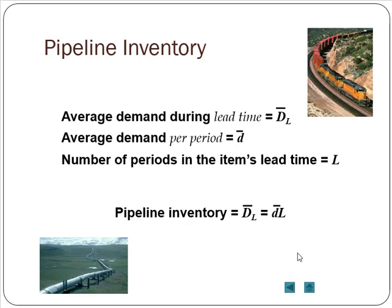So we define that as L, the lead time. The demand during the lead time is average demand per period, D bar, multiplied by the number of periods in the item's lead time. So pipeline inventory equals average demand per period multiplied by the number of periods in the item's lead time.